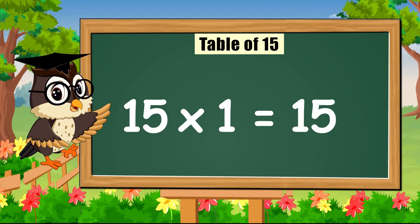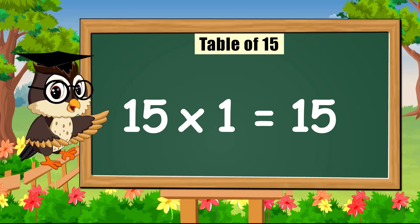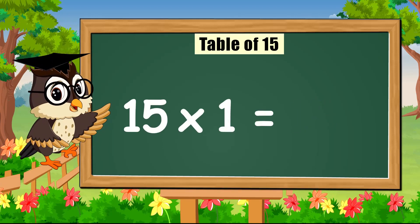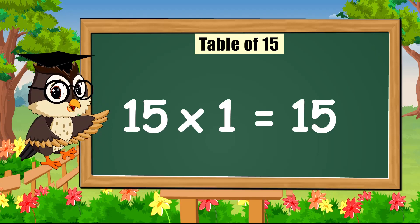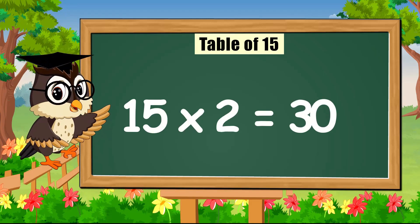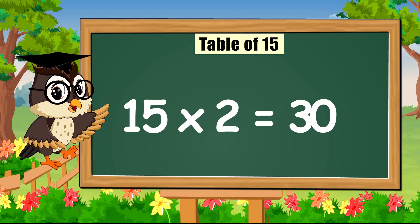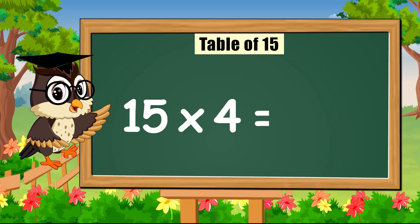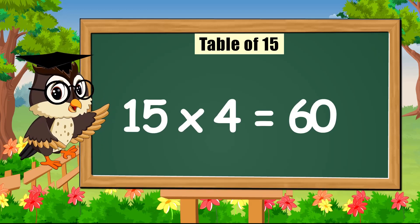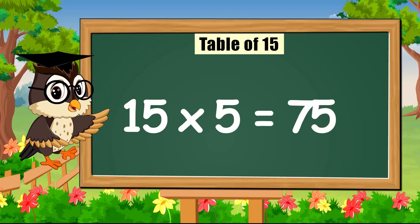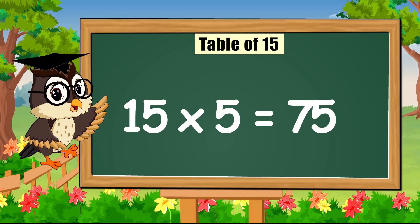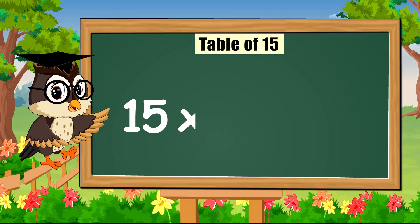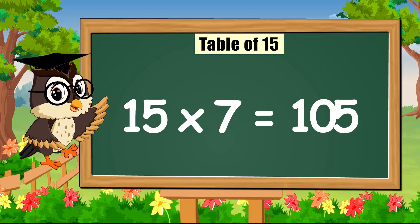Hello everyone, we are gonna learn today. Sing with me the table of fifteen. Come on! Fifteen times one is fifteen. Fifteen times two is thirty. Fifteen times three is forty-five. Fifteen times four is sixty. Fifteen times five is seventy-five. Fifteen times six is ninety. Fifteen times seven is a hundred and five.